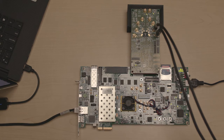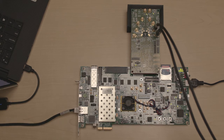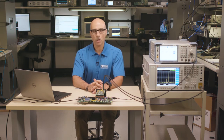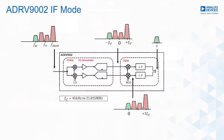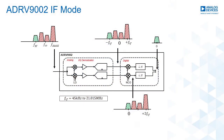The ADRV9002 has the highest dynamic range on the market today, from 30 MHz to 6 GHz. It achieves exceptional phase noise and blocker rejection performance. The receiver has both zero and IF down-conversion capability. In an IF down-conversion mode, the desired signal, its image, and any other blockers are down-converted to an IF in the digital baseband. The desired signal is extracted, the blockers are filtered, and the image is rejected, all in the digital domain.